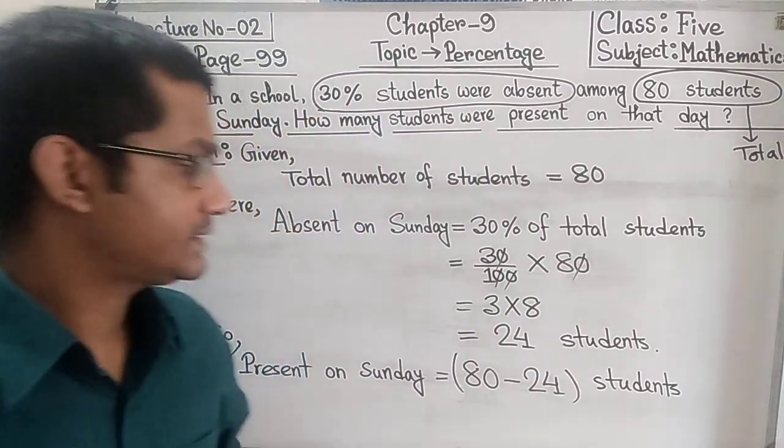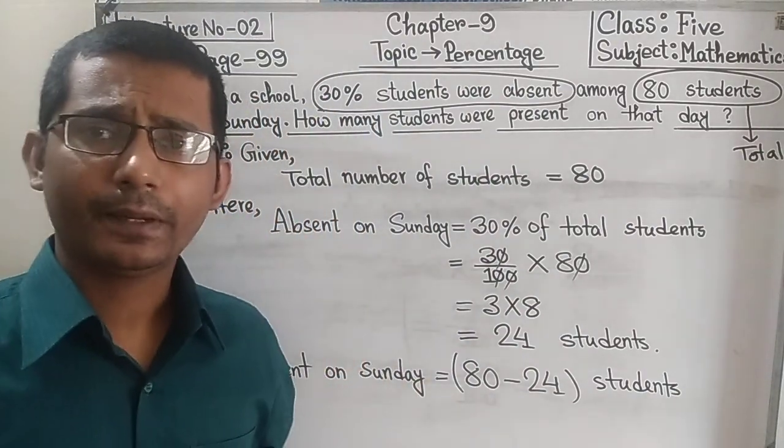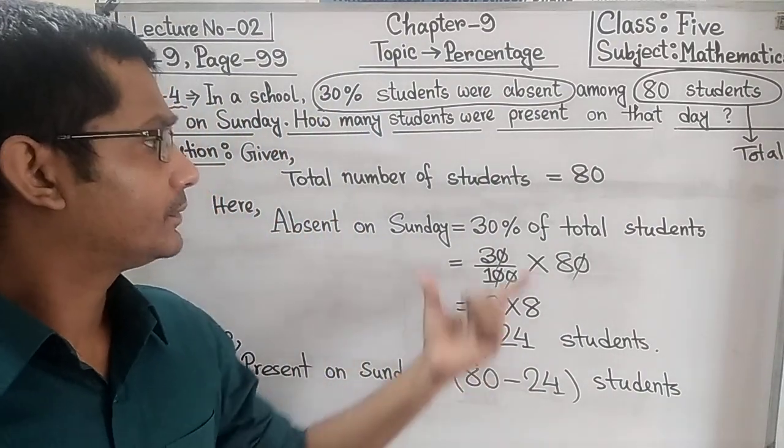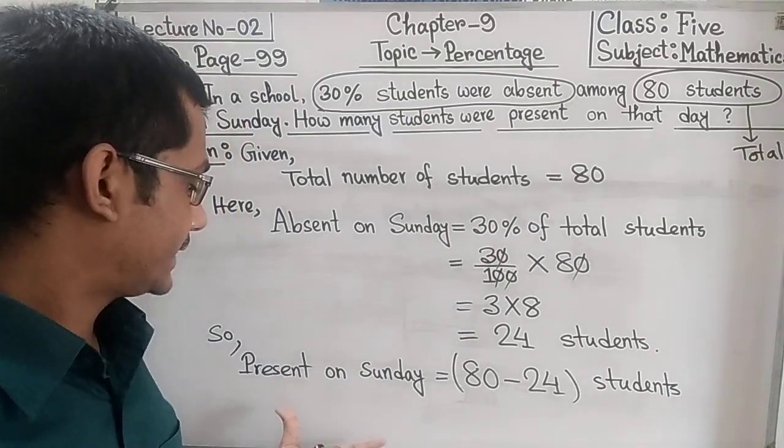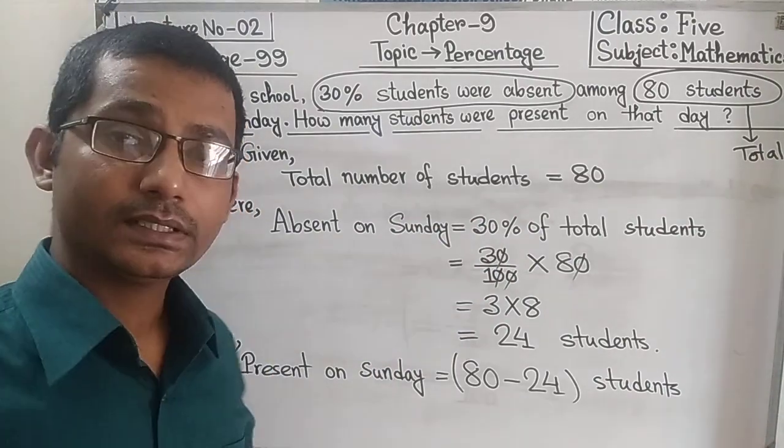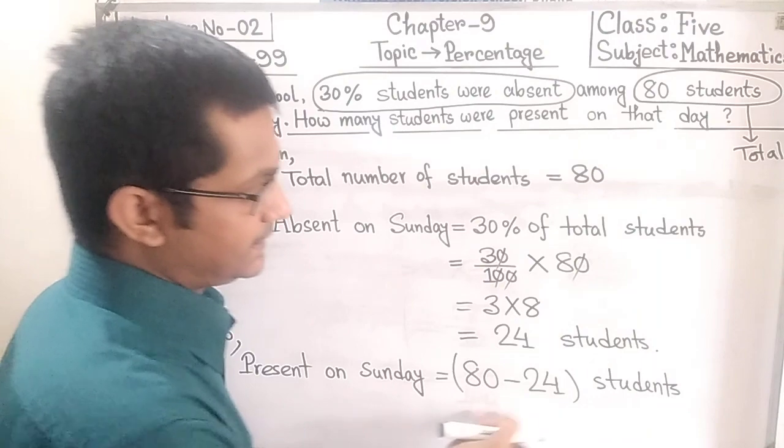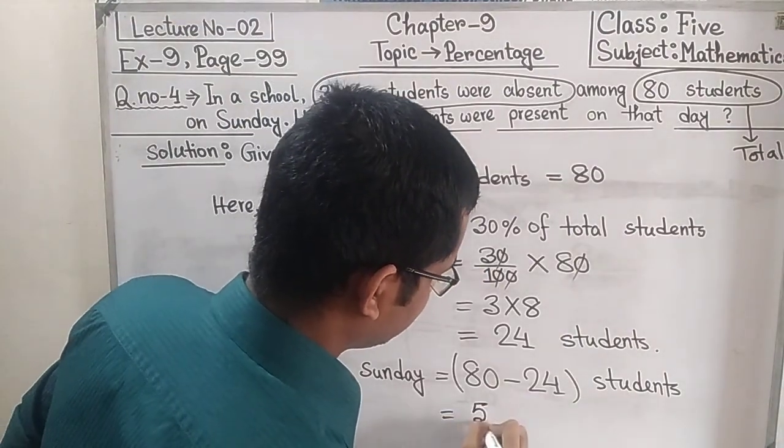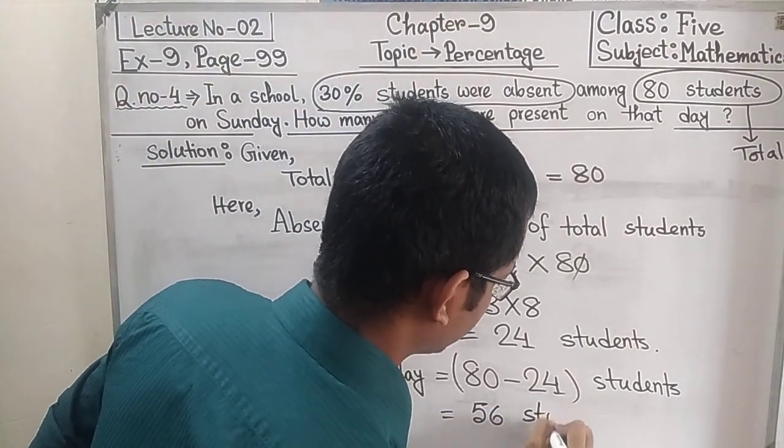Here, if we subtract the number of absent students from total number of students, then we will get the number of students present on Sunday. So now 80 minus 24, that makes 56 students. And this is our answer.